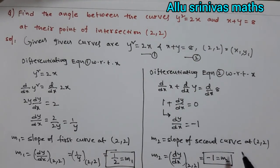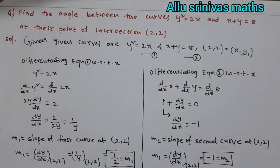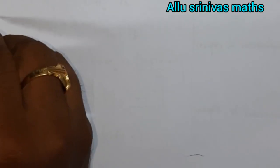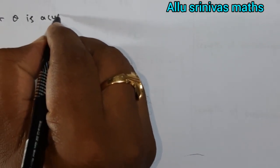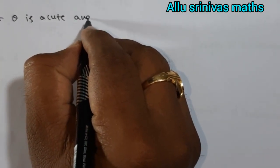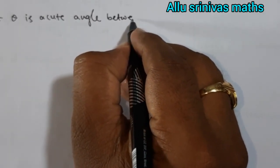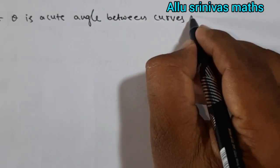Next we have to find the angle between two curves. Let θ is acute angle between two curves 1 and 2.